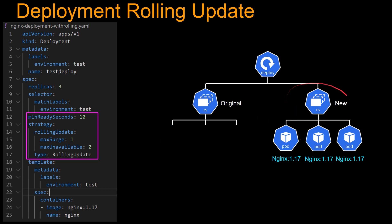Another Nginx 1.17 pod will come up, and after 10 seconds the last remaining old pod goes away. The new replica set will have three pods and the original replica set will be empty. At this point, you can actually go and delete this original replica set and it will be deleted. However, if you try to delete the new replica set which has three running pods, this deployment will restore it. For the original replica set, since it has no pods running, you will be able to delete it.